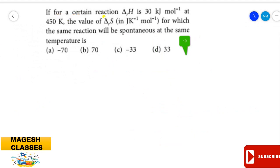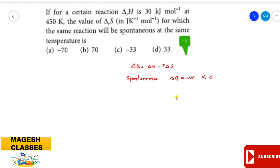Question 19: For an incident reaction, ΔH = 30 kJ/mol at 450 K. What value of ΔS (in J/K/mol) will make the same reaction spontaneous at the same temperature? The relationship between ΔG, ΔH, and ΔS is: ΔG = ΔH − TΔS. For a spontaneous reaction, ΔG must be negative, i.e., less than 0.